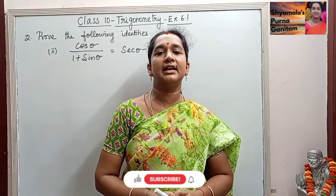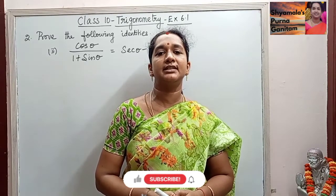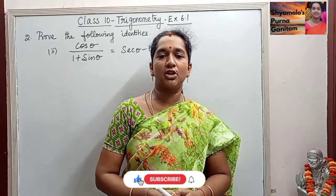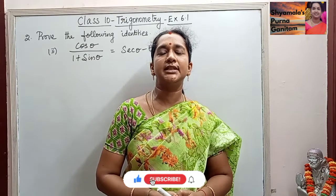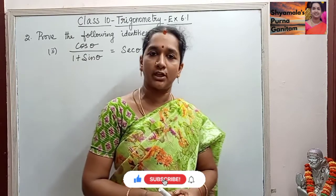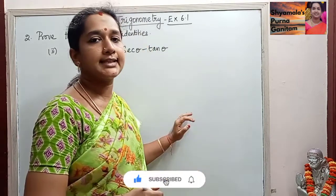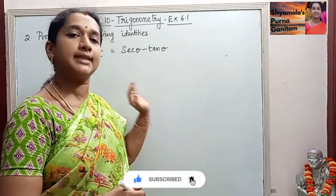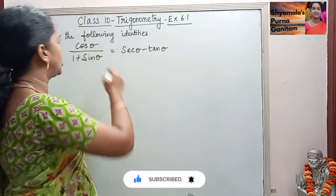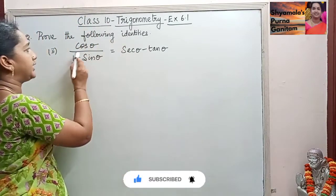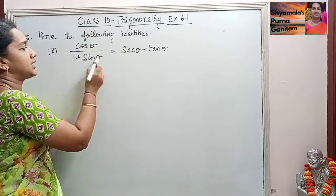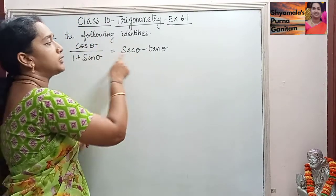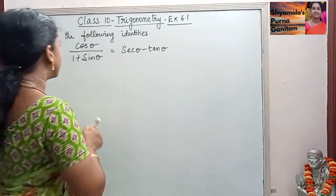Good morning students. In this class, I will be doing Class 10 Samacheer Kalvi Syllabus, or Matriculation Syllabus, 6th chapter trigonometry, Exercise 6.1, second subdivision, second sum. Prove the following identity: cos theta by 1 plus sine theta is equal to secant theta minus tan theta.